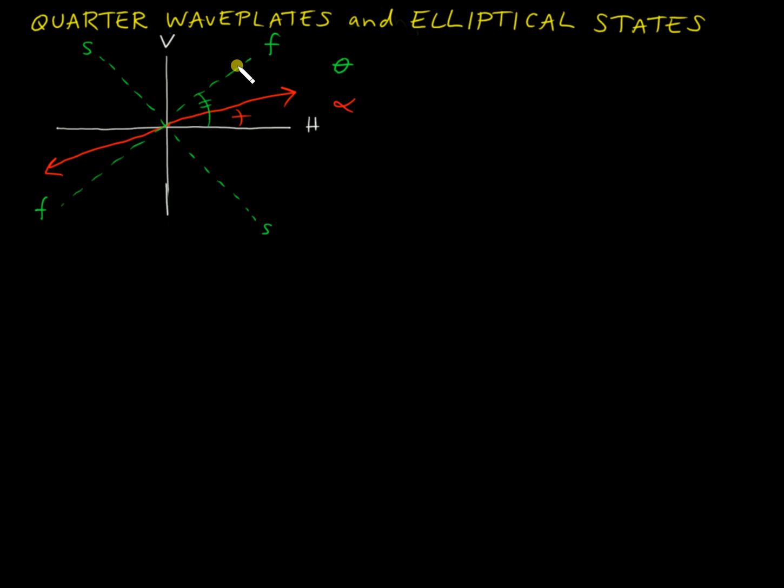The first thing that you do to set up this problem once you've drawn the waveplate axes is to surround this red linear state with a box, a box whose vertical and horizontal are aligned with the fast and slow axes. You take the corners of the arrow here, you draw two other corners symmetric with the axes of the waveplate, and then you connect them.